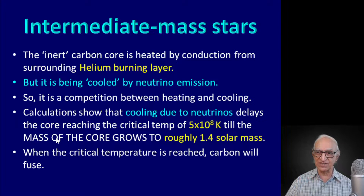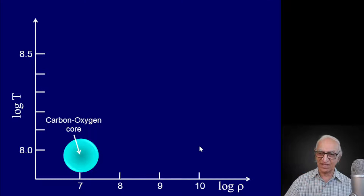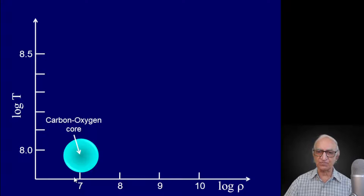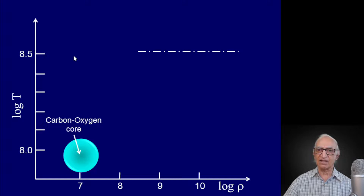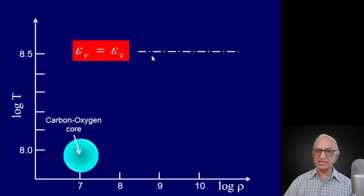When this critical temperature is reached — when the mass of the core finally attains roughly 1.4 solar masses — carbon will ignite. Let us look at this plot of log temperature increasing vertically and log density increasing horizontally. We are considering the inert carbon-oxygen core of an intermediate mass star. I am going to draw a horizontal line at roughly that temperature.